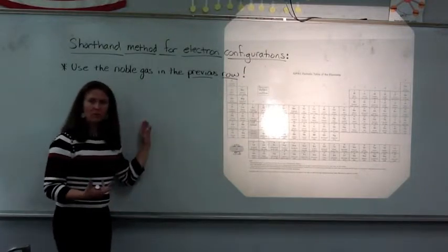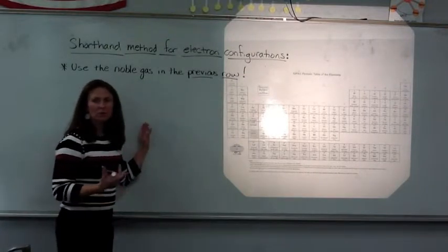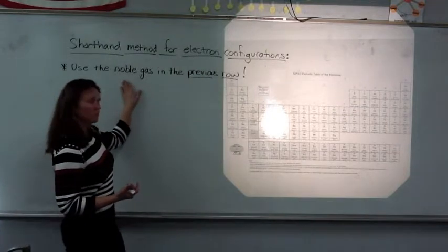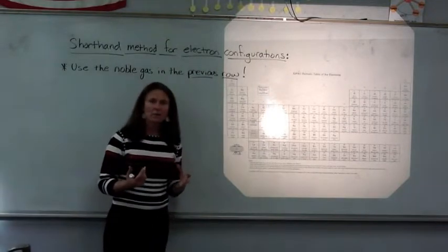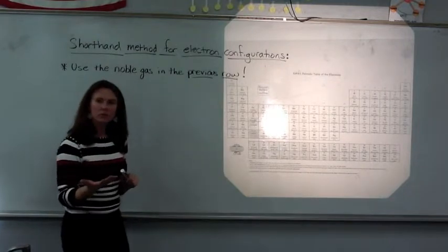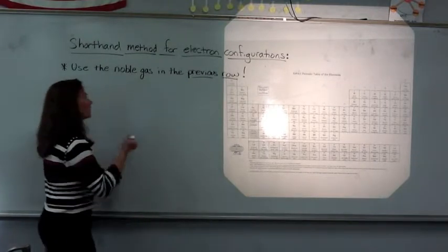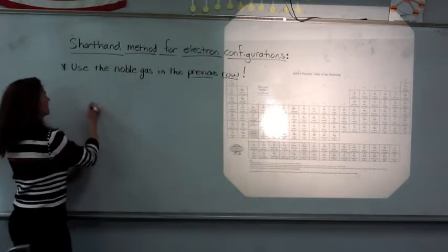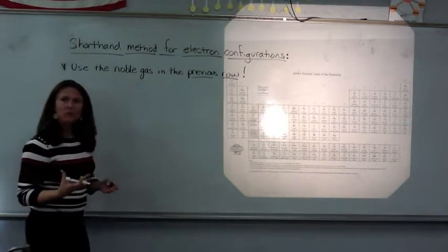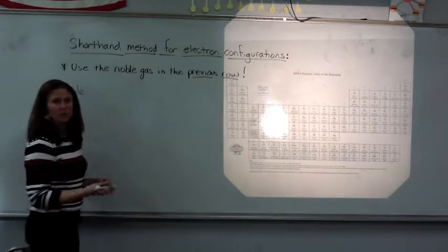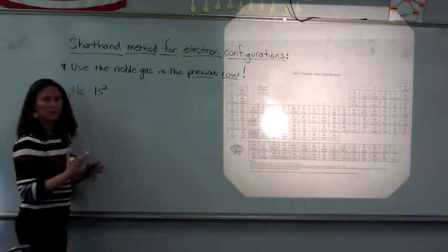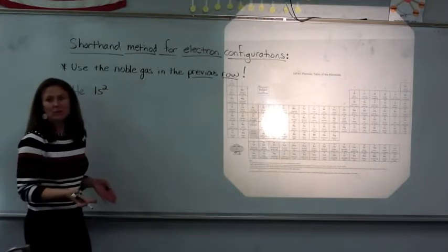The shorthand method of configurations uses the noble gas in brackets. We do that because if we look at the configurations for these noble gases, one of the first ones is helium. The atomic number is 2, so it really only has 2 electrons, and the configuration is 1s2, and that doesn't change.